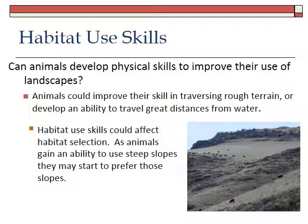One last point is habitat use skills. While I don't know of specific research on this, I believe animals develop physical skills that improve their use of landscapes. Here's a picture of cows up in the Riggins area in steep canyon grasslands — animals could really improve their ability to traverse rough terrain. They could develop the ability to travel further from water and use steeper territory, much the same way any of us could learn to be better at activities requiring physical dexterity. Animals can gain skill to use habitats — use steeper slopes and perhaps travel further from water.